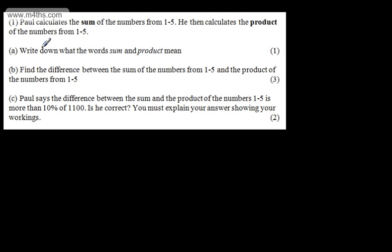In part A for one mark, we're asked to write down what the words sum and product mean. So all I'm going to do quite clearly in the space provided on the exam paper is write A. I'm going to write the word sum. Sum means add. So if I wanted to sum the numbers from 10 to 12, I would add 10 to 11 to 12. I'm now going to write product. Product means multiply. So this is nice and clear. The examiner can read it and I've written it down.